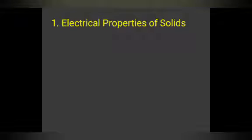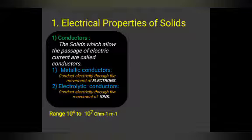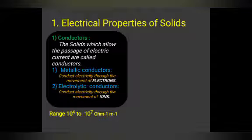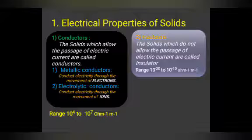The first electrical property: conductors. Solids which allow the passage of electric current are called conductors. There are two types — metallic conductors, which conduct electricity through metals because the movement of electrons is possible inside the metal, and electrolytes, which in molten or aqueous state break down into positive and negative ions, making conductivity possible. The range for conductors is 10^4 to 10^7 ohm inverse meter inverse.